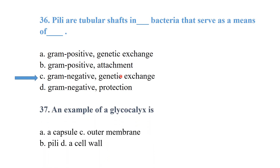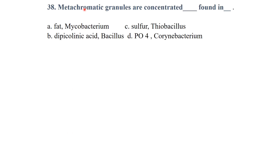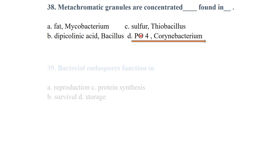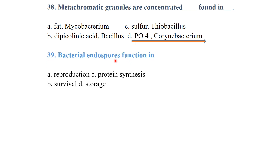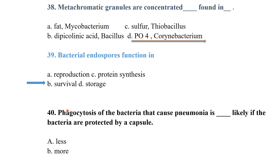An example of glycocalyx is the capsule. Metachromatic granules are concentrated with phosphate and found in Corynebacterium diphtheriae. Bacterial endospores mainly function in the survival of bacteria in harsh conditions.